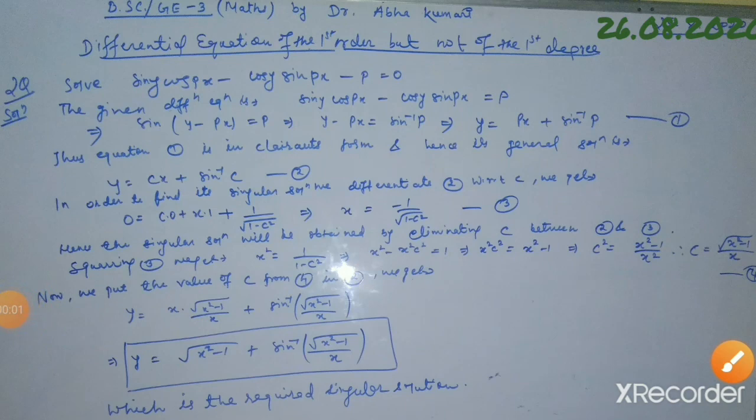Let us see another question. The question is: solve sin(y)·cos(px) minus cos(y)·sin(px) minus p equals 0. Earlier the equations we have seen were not of trigonometric functions. So let us see how we can solve the equation when it involves trigonometric functions and we have to change it into Clairaut's form.